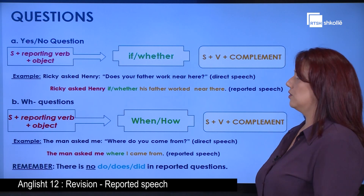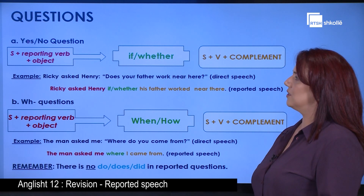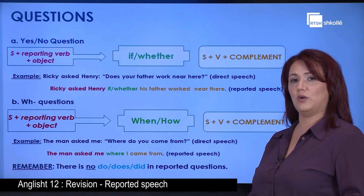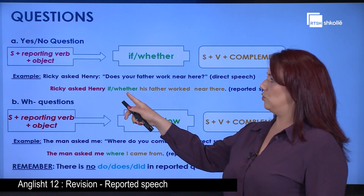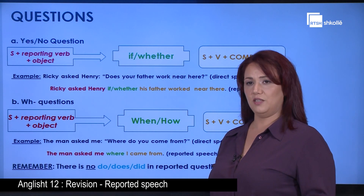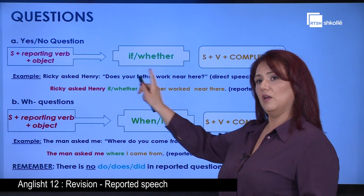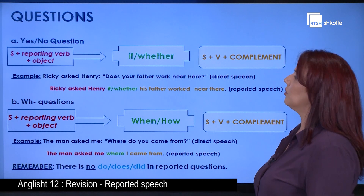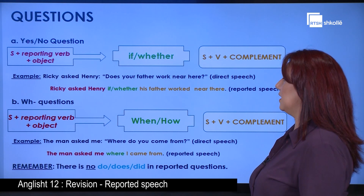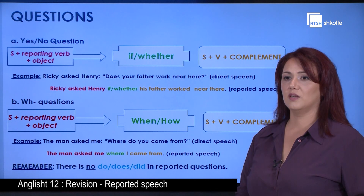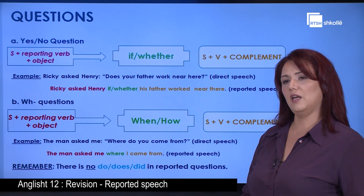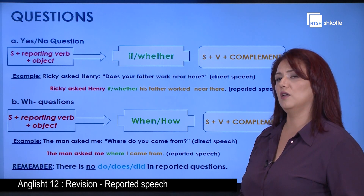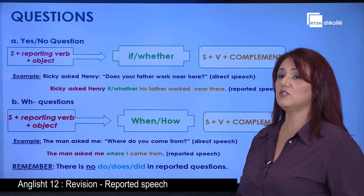Regarding questions, there are two types. First, the yes or no questions. The structure for these is: subject plus reporting verb plus object, then 'if' or 'whether', then subject plus verb and complement. For example, 'Ricky asked Henry, does your father work near here?' — this is the direct speech — and in indirect speech the question would become 'Ricky asked Henry if or whether his father worked near there.'